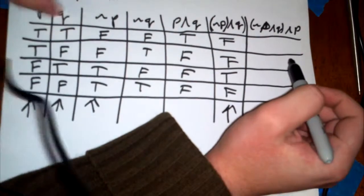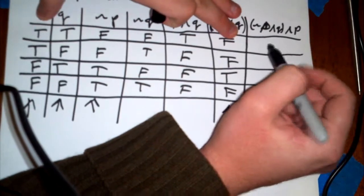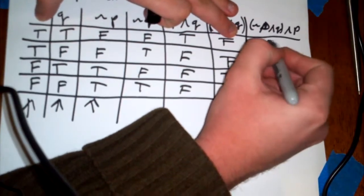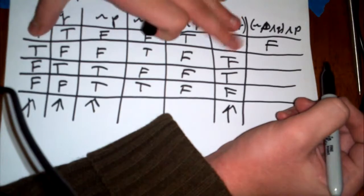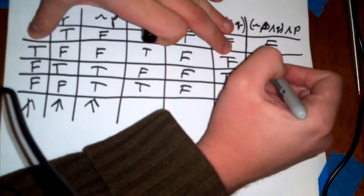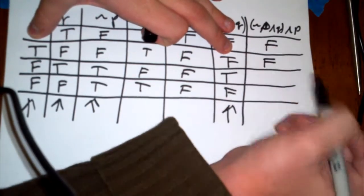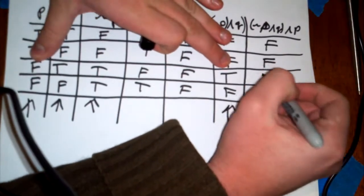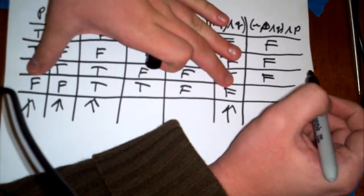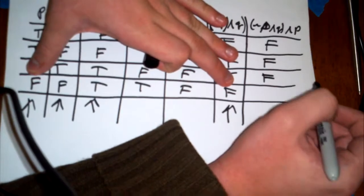So the first one here, if we're looking, this one's false and that one's true, so one of them is false, so that's false. And this one here, one's true and one's false, so that's also false. This one, one of them is false, so that's false. And then one of these is false, therefore this is false.